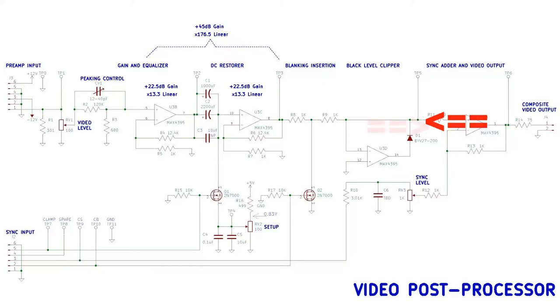Then it goes into the last amplifier U3A, which is a combination of output jack driver and sync adder. The sync signal, the composite sync from the sync generator, comes in through R10 and into RV3A.